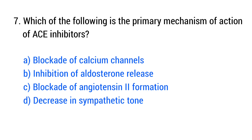Question number 7. Which of the following is the primary mechanism of action of ACE inhibitors? The right answer is option C: Blockade of angiotensin-2 formation.